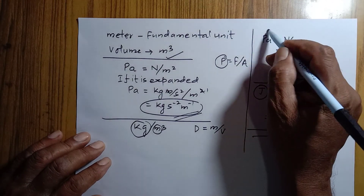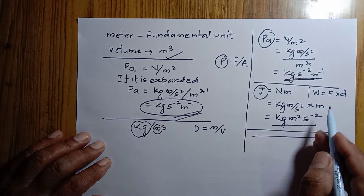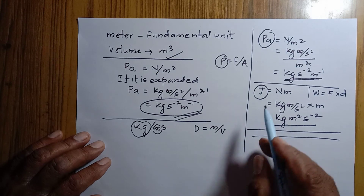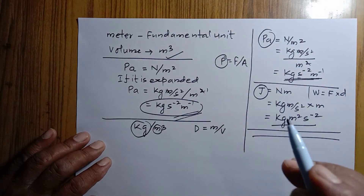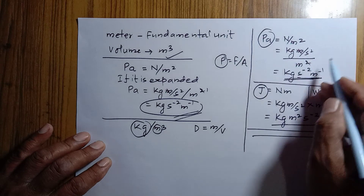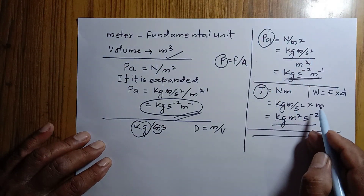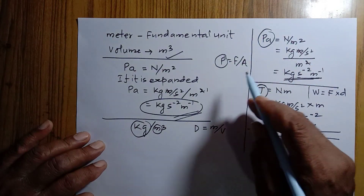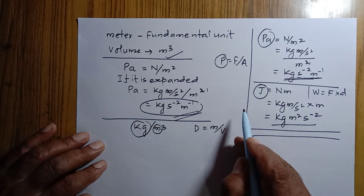Pascal, Joule, Newton, etc. are derived units. The fundamental units involved in each of these can be found by writing the expanded form of each derived unit.